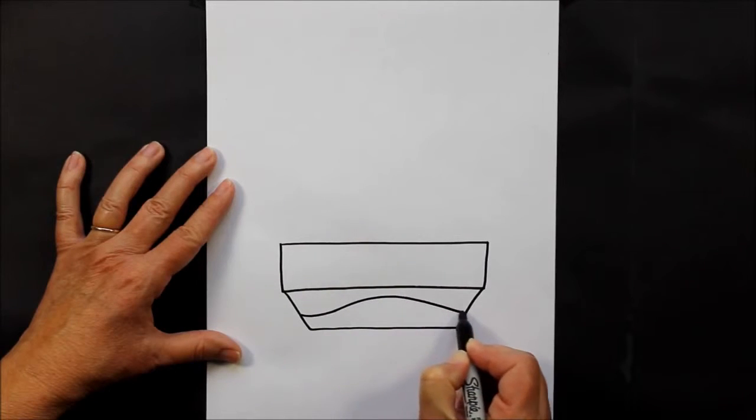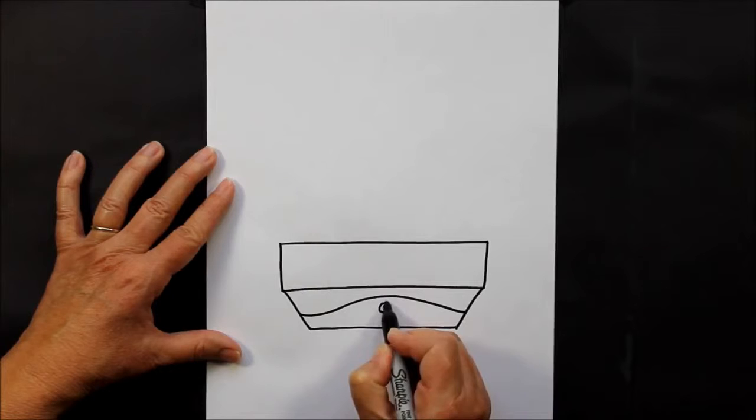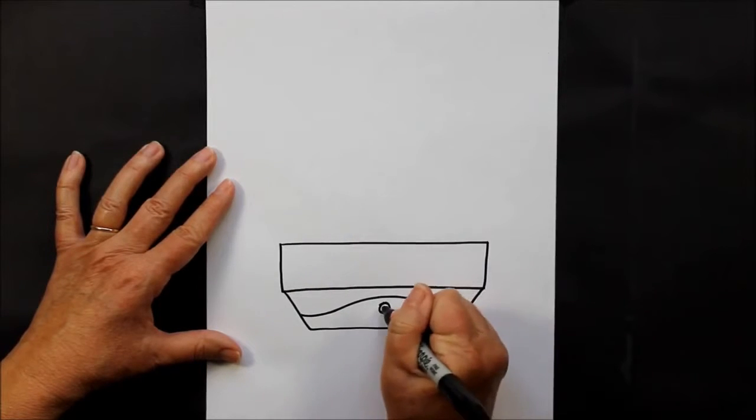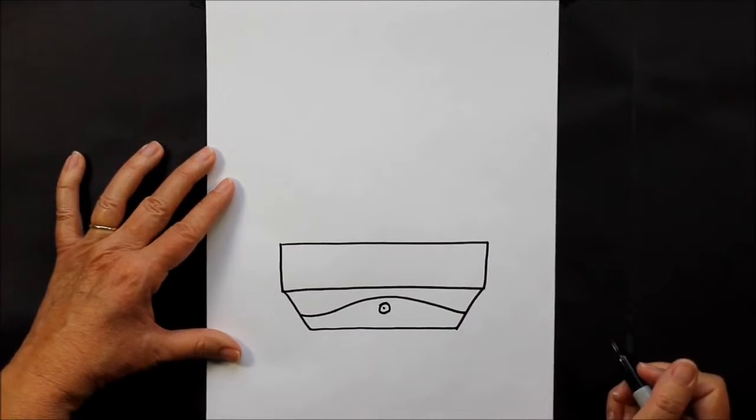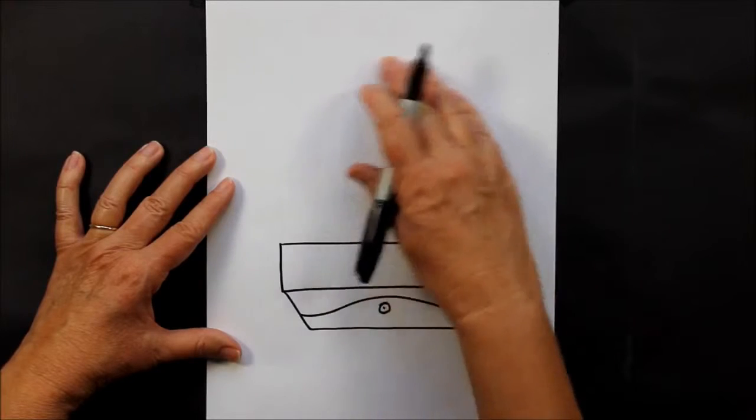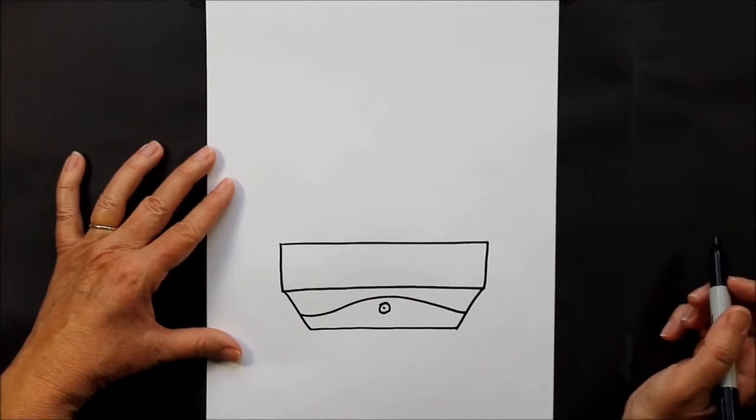I think I'm just going to put a curved line and maybe a circle with a dot in it. Now let's go back up to the top part of our paper and we're going to make a couple little cactus plants.